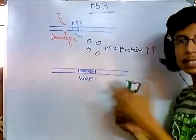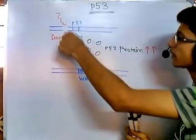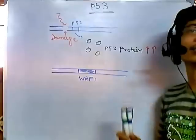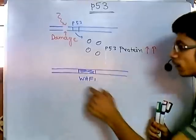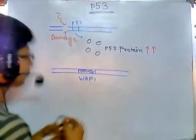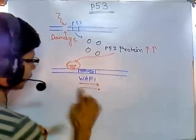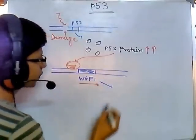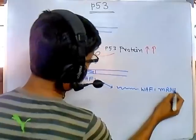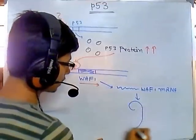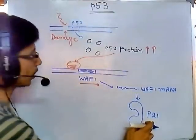The signaling that occurs after damage and causes p53 levels to rise is still not completely understood. But essentially, p53 goes and sits onto the promoter of WAF1, increasing the transcription of WAF1 so that many WAF1 mRNA molecules are made. From WAF1 mRNA, translation produces the WAF1 protein, which is called p21.